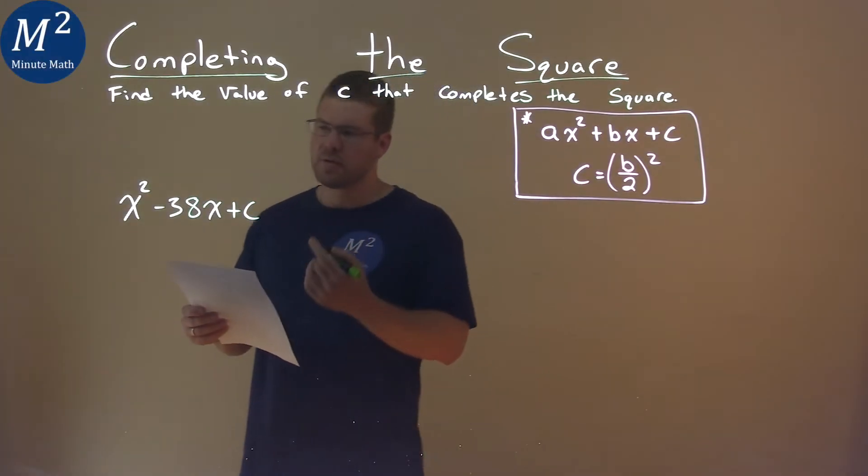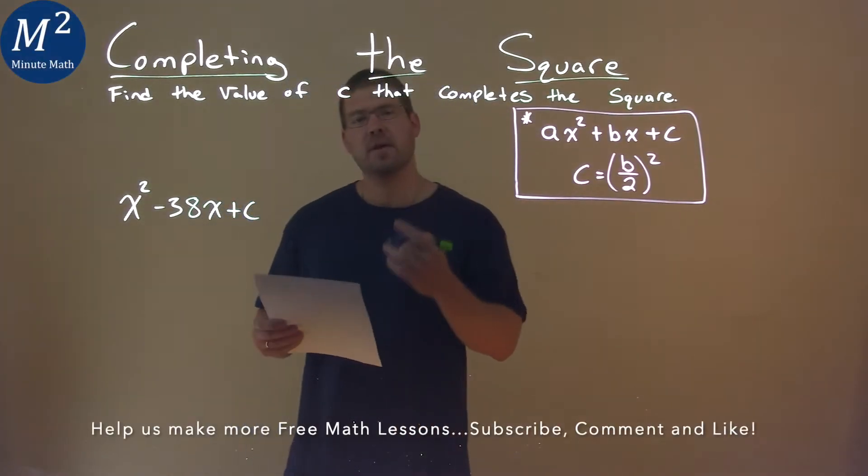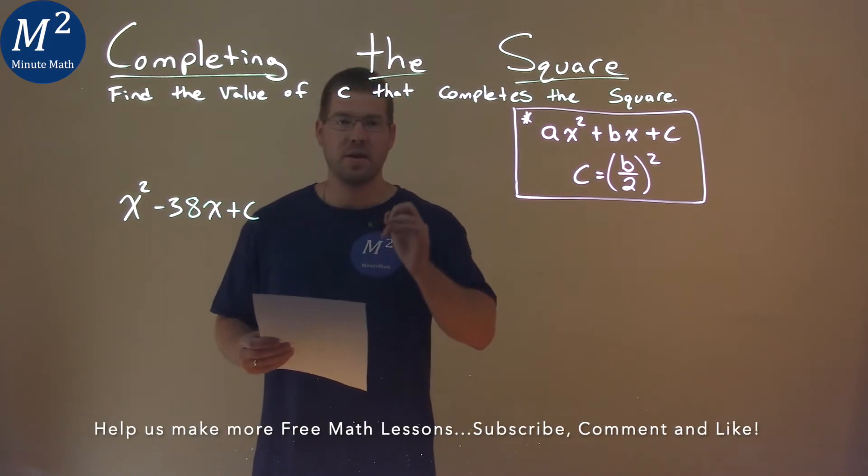We're given this problem right here: x squared minus 38x plus c. We need to find the value of c that completes the square.